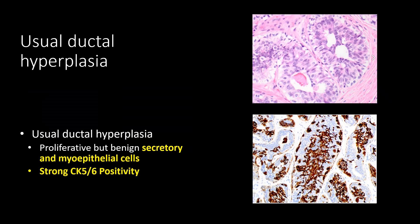Usual ductal hyperplasia is a proliferation of benign secretory and myoepithelial cells. You can see that this layer is becoming a little more thick, but we're still preserving the layer of myoepithelial cells. For that reason, there's going to be strong CK5/6 positivity, which is a stain used to identify those myoepithelial cells.